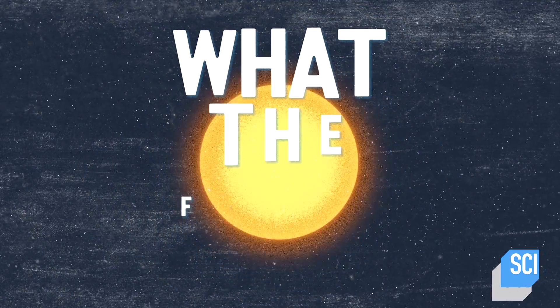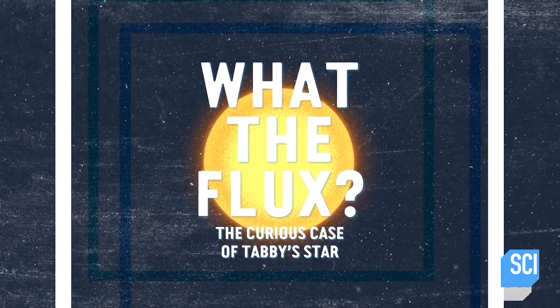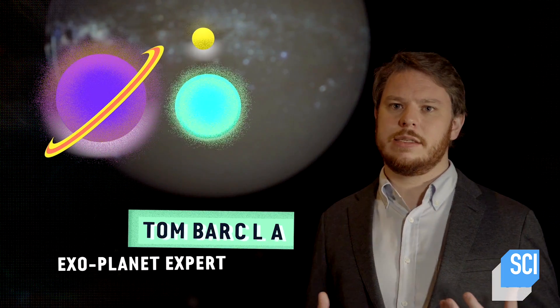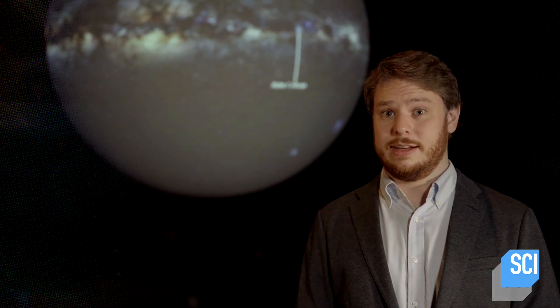But the weirdest story of them all was a star named Tabby, whose bizarre blinking can't be explained. Tabby's star is perhaps the most interesting star we observed with the Kepler space telescope. Tabby's star exhibits dimmings in brightness. We see 20% of the light dip every 700 days or so, and we don't know what's causing it.